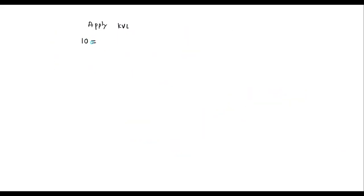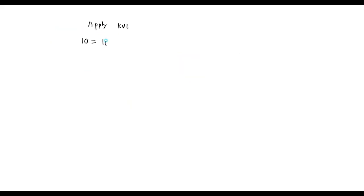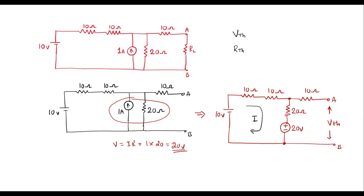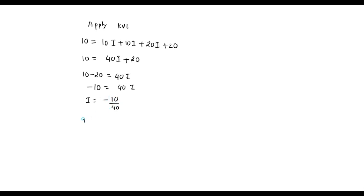Applying Kirchhoff's Voltage Law: 10 equals the voltage drop across this plus the voltage drop across this, that is 10I plus 10I. Then current will flow through the 20 ohm resistor, giving plus 20I. And here we have a voltage source that should be added as it is: plus 20. Simplifying: 10 equals 20 plus 20, giving 10 minus 20 equals 40I, or minus 10 equals 40I, so I equals minus 10 divided by 40, which is I equals minus 0.25 amp.